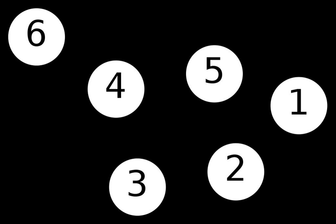A path graph or linear graph of order n≥2 is a graph in which the vertices can be listed in an order v1, v2, …, vn such that the edges are the pairs {vi, vi+1}. Path graphs can be characterized as connected graphs in which the degree of all but two vertices is 2 and the degree of the two remaining vertices is 1. If a path graph occurs as a subgraph of another graph, it is a path in that graph.